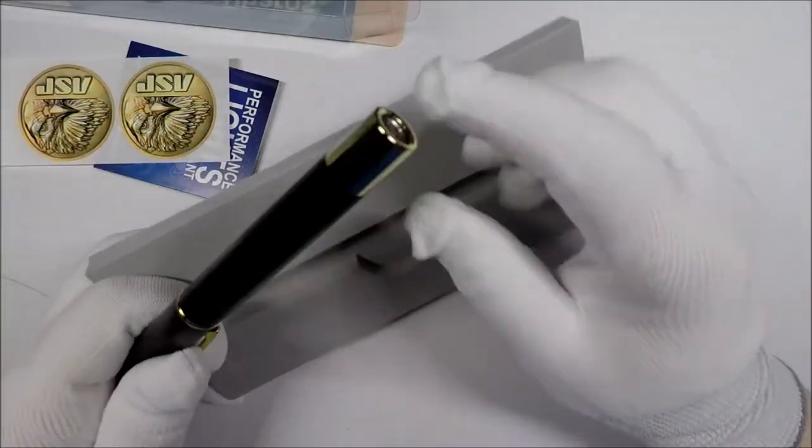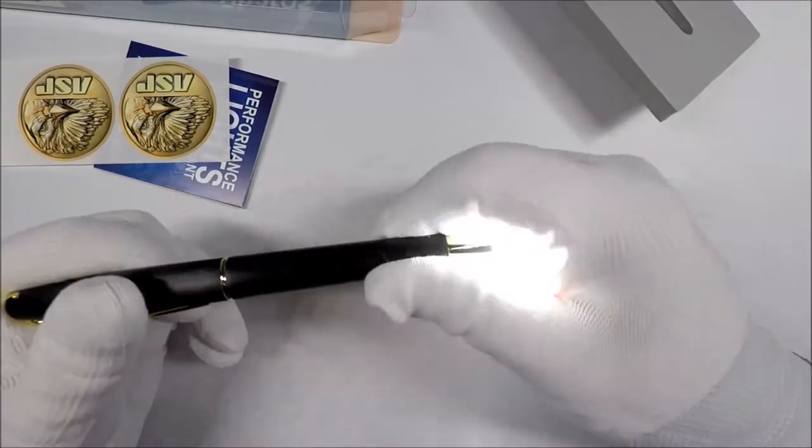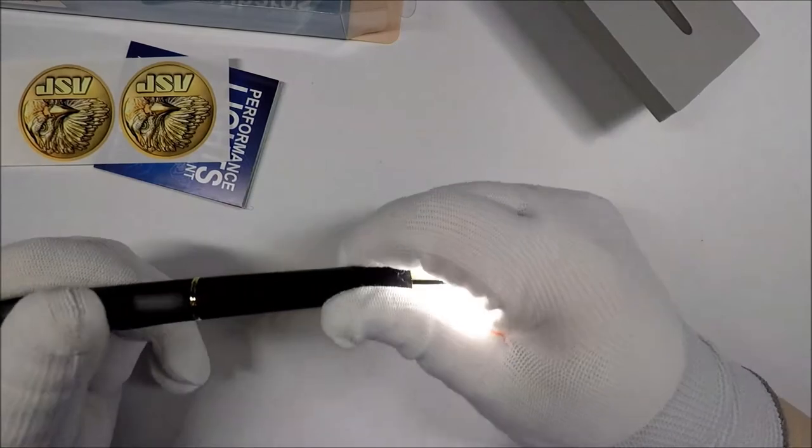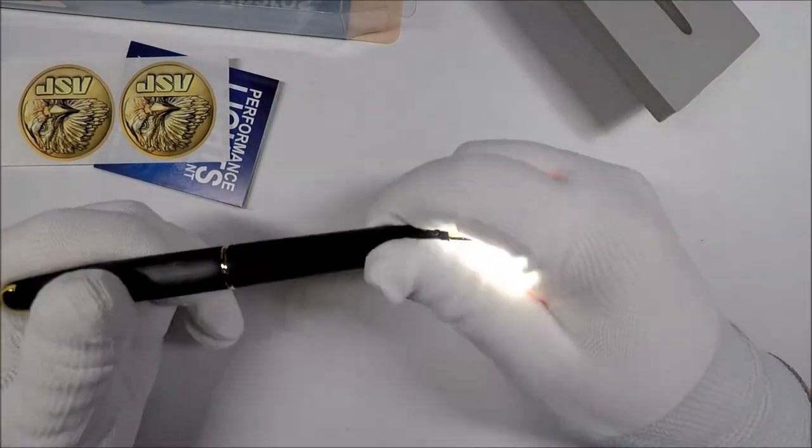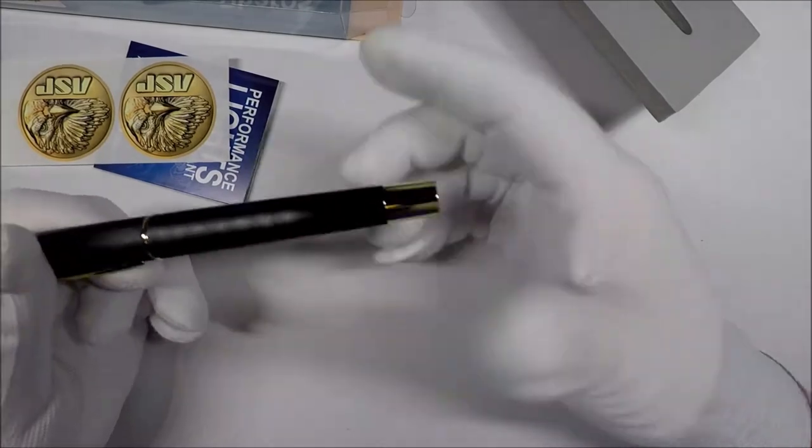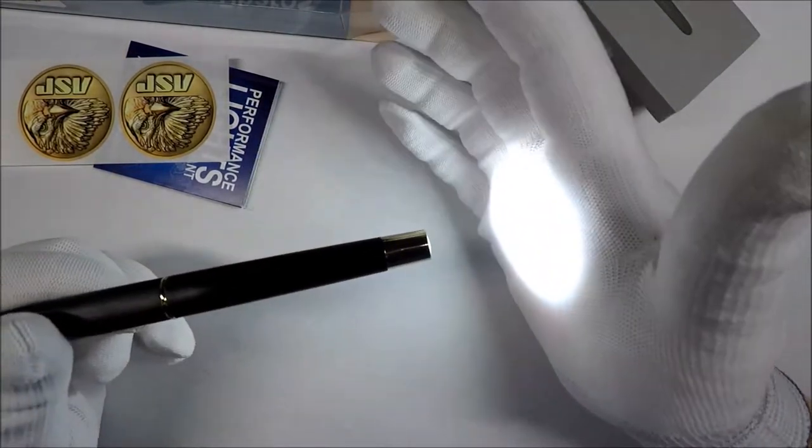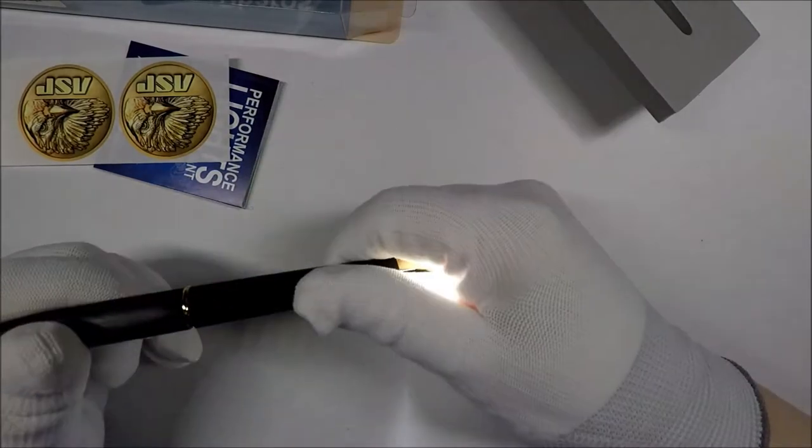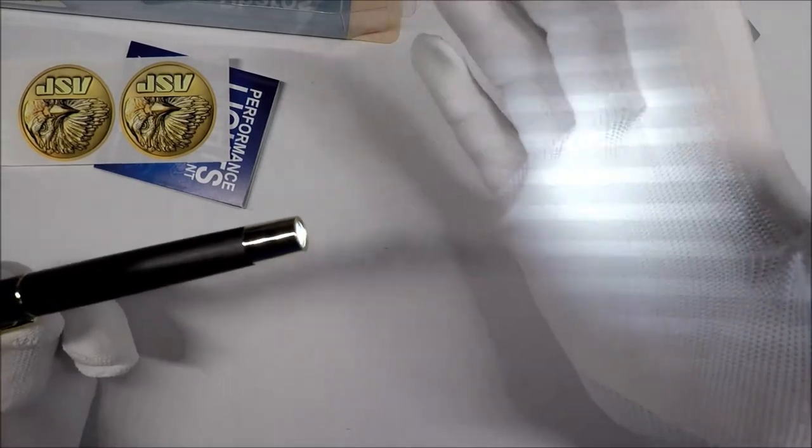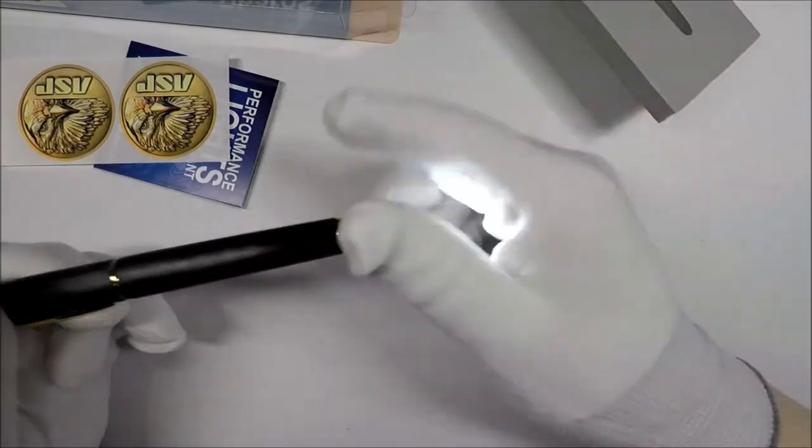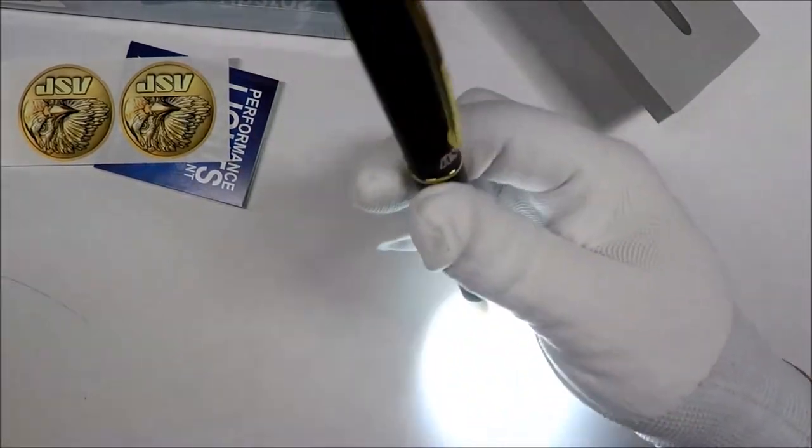So, let's try this out. It feels heavy enough that there should be batteries in it already. Oh, wow! So, that is bright. So if you click it on and off, you get the dimmer version.